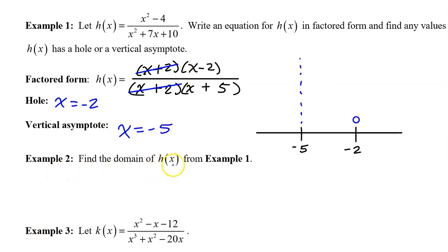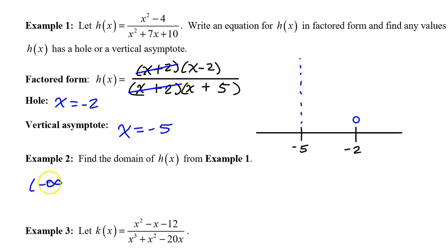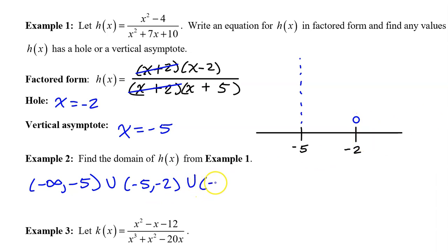Example 2: find the domain of h of x from example 1. A vertical asymptote and a hole are the places where a rational function is undefined; it will be defined everywhere else. So once you identify any vertical asymptotes and holes, you can give the domain starting from negative infinity and skipping over any vertical asymptotes or holes. So the first interval will go from negative infinity to negative 5, union negative 5 to negative 2, union negative 2 to infinity. Use all parentheses because undefined values can never be included in the domain.